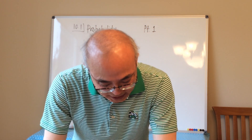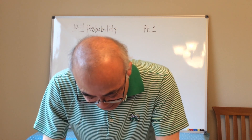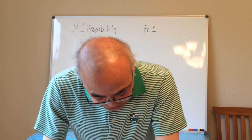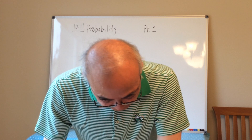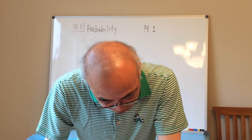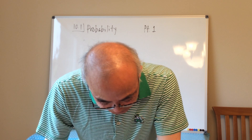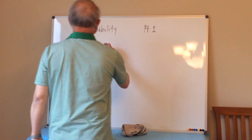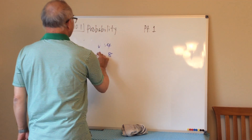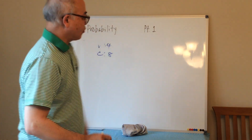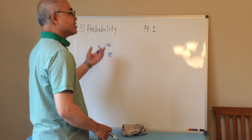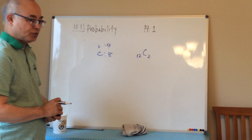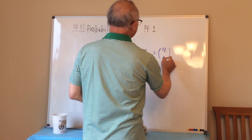Example four: Sal opens a box of a dozen chocolate-covered creams and offers two to Val. Val likes vanilla best, but all chocolates look the same. Four of the twelve are vanilla and eight are chocolate. We want the probability that both of Val's picks are vanilla. Out of 12 chocolates choosing 2, we use combinations: 12 choose 2, calculated as 12! / (2! × 10!).